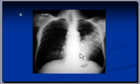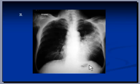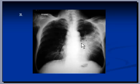Another chest X-ray shows consolidation in the left lingular region. There is an area of the left lung which is known as the lingula, and this X-ray shows consolidation in the left lingular region. Notice you cannot see the left cardiac border here — the left heart border is not visible.